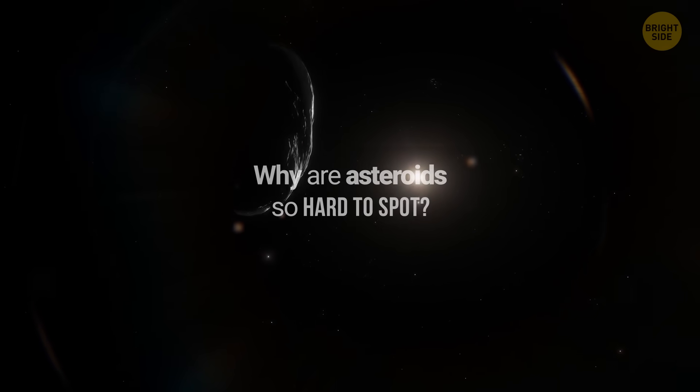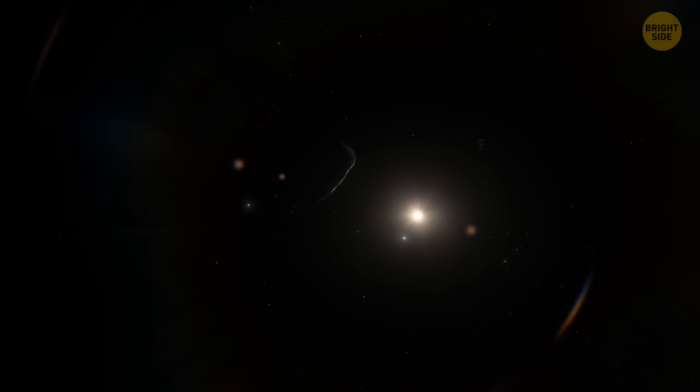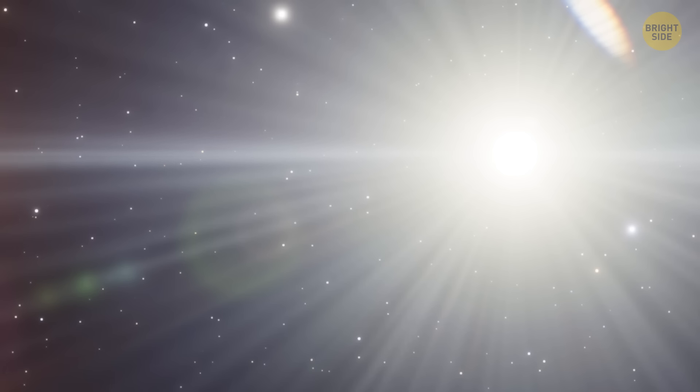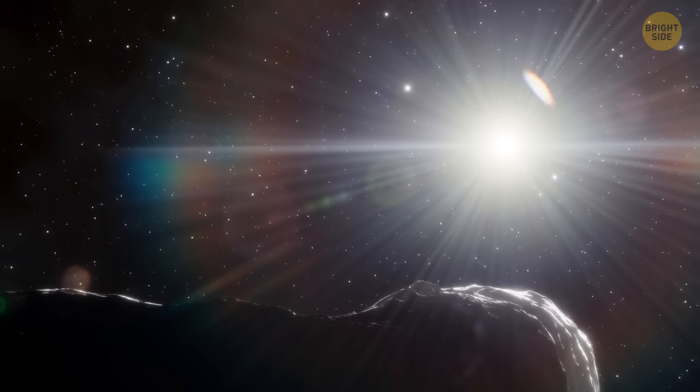Why are they so hard to spot? Some asteroids are nearly coal black, blending into the cosmic night. Others hang out close to the Sun from our perspective, so our telescopes get overwhelmed by brightness. It's like trying to locate a mosquito while staring directly at the sunlight. Please don't do this.